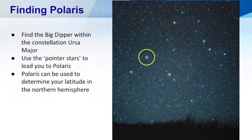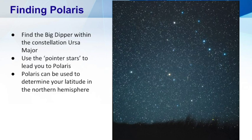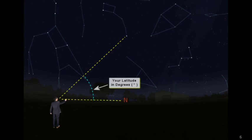What's interesting is that Polaris can be used to determine your latitude in the northern hemisphere. If you take a look at this picture, you can see that if you measure the degrees in which Polaris sits off the horizon, this will give you your latitude in degrees in the northern hemisphere.